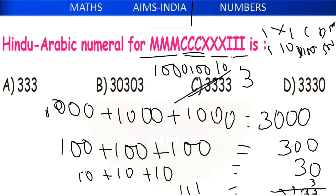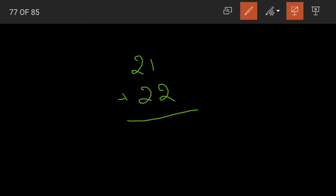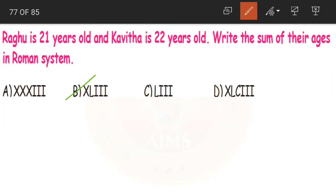Next: Raghu is 21 years old and Kavitha is 22 years old. Write the sum of their ages in the Roman system. 21 + 22 = 43. Split 43 as 40 + 3. 40 is XL (50 − 10), and 3 is III. So 43 = XLIII — that is option B.